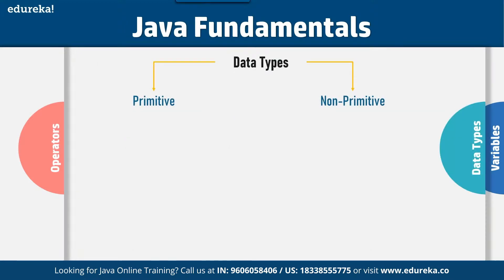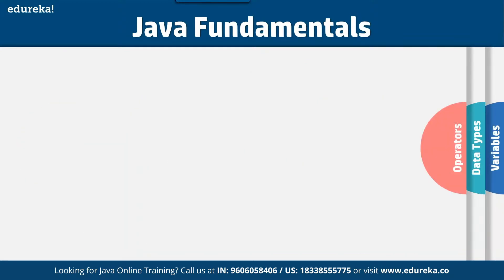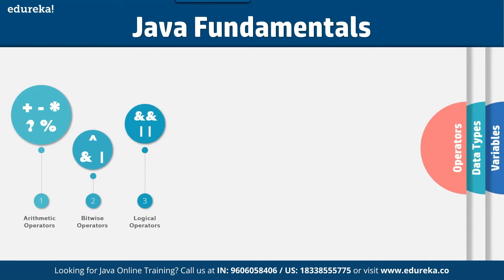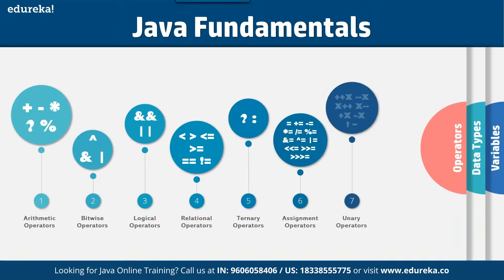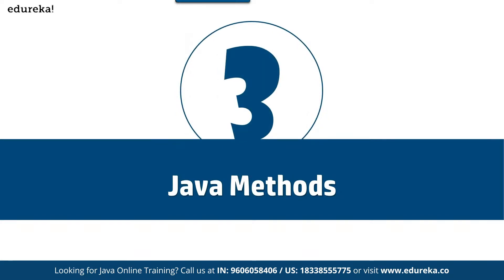Talking about data types and operators: we have primitive data type and non-primitive data type. Primitive data types like boolean, character, and integral have predefined types that we cannot change. Non-primitive data types like string can be defined as per your requirement. Java supports all the major operators: arithmetic operators like plus and minus, bitwise operators like AND gates, logical operators, relational operators, ternary operators, assignment, unary, and shift operators.